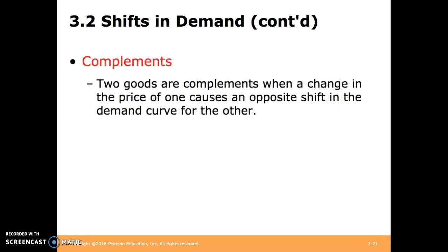Complements are the opposite of substitutes. Two goods are complements when a change in the price of one causes an opposite shift in the demand curve for the other. For example, movie theater tickets and popcorn — if the price of tickets goes down, you're likely to buy more popcorn, and thus its demand has gone up.